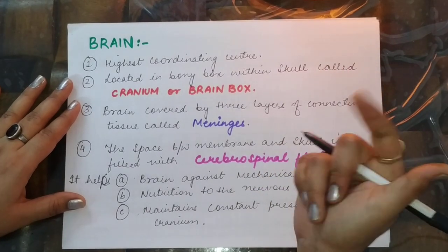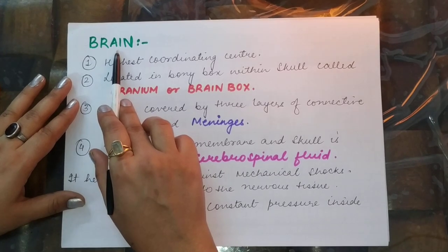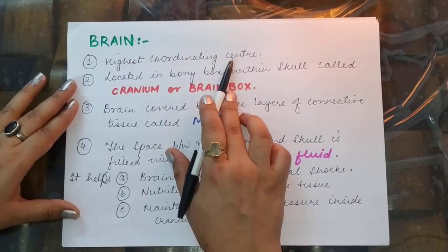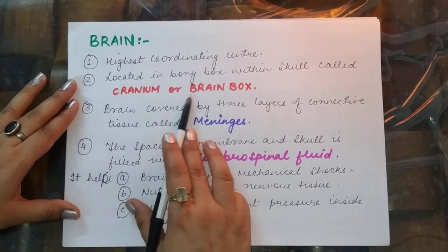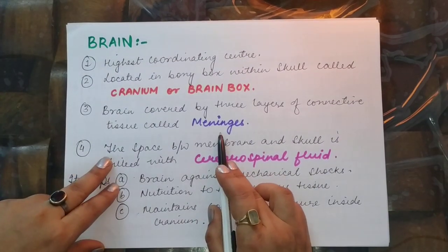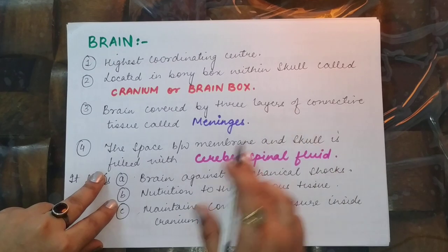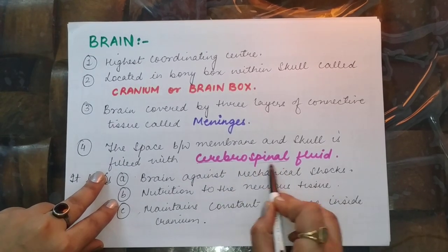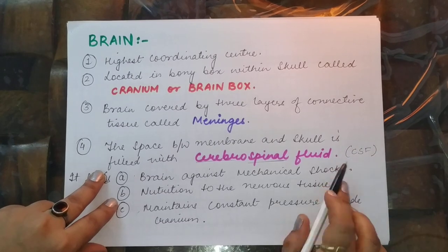There are two kinds of coordination in human beings — nervous and chemical. The brain is the master organ and the highest coordinating center. It is located in a bony box within the skull, called the cranium or brain box. The brain has three layers of connective tissue called meninges. The space between these membranes and the skull is filled with cerebrospinal fluid (CSF), which is present in both the cerebrum and the spinal cord.